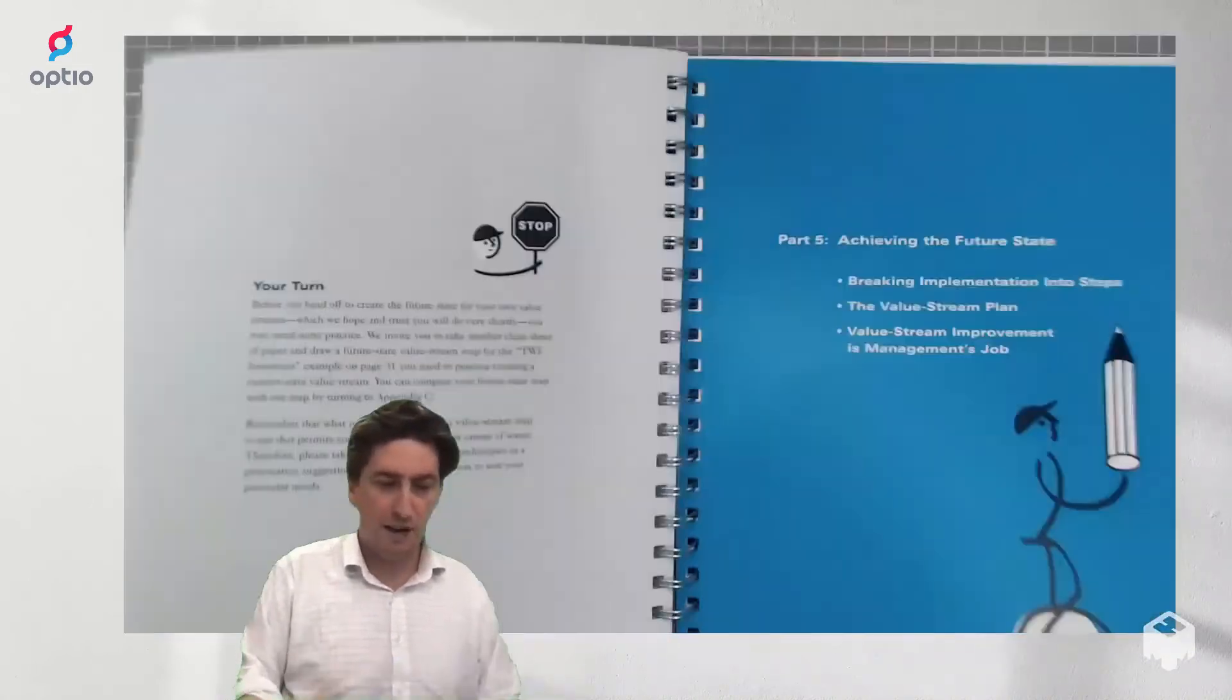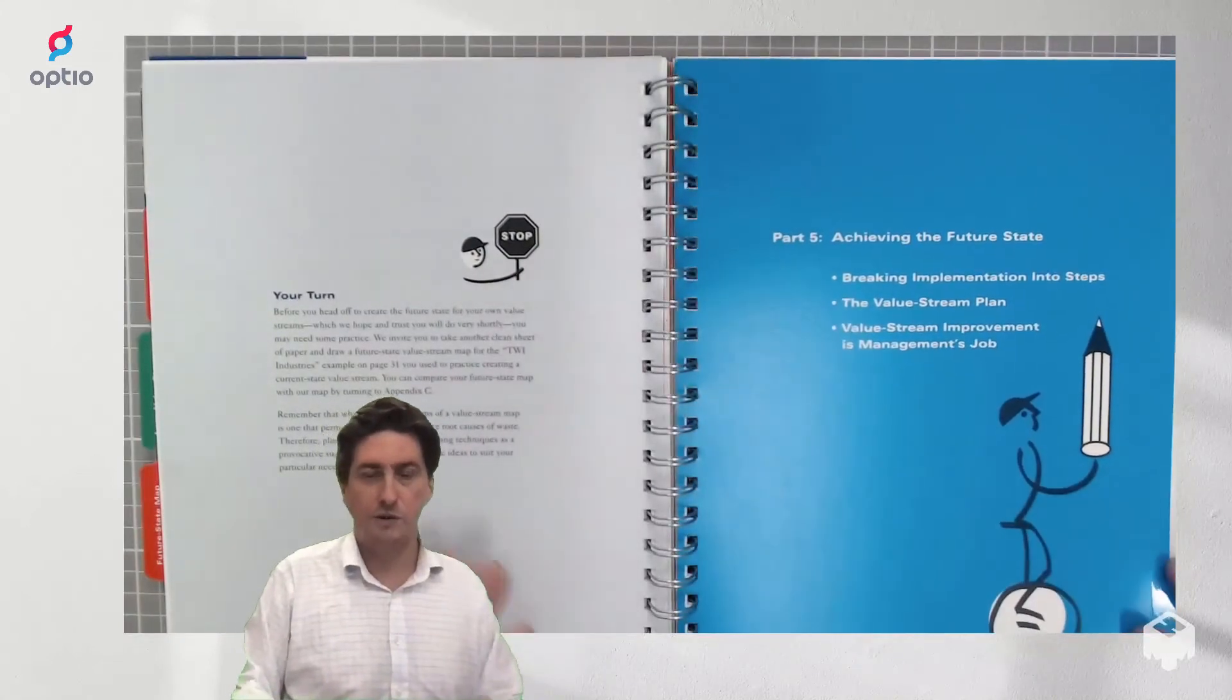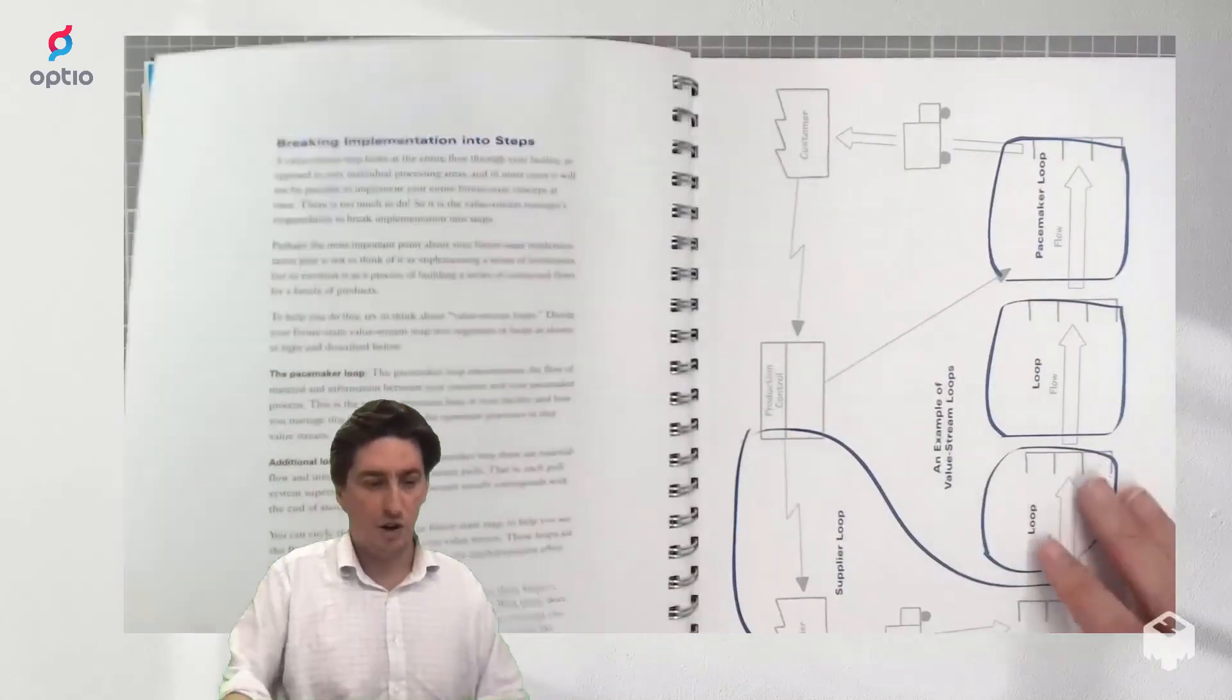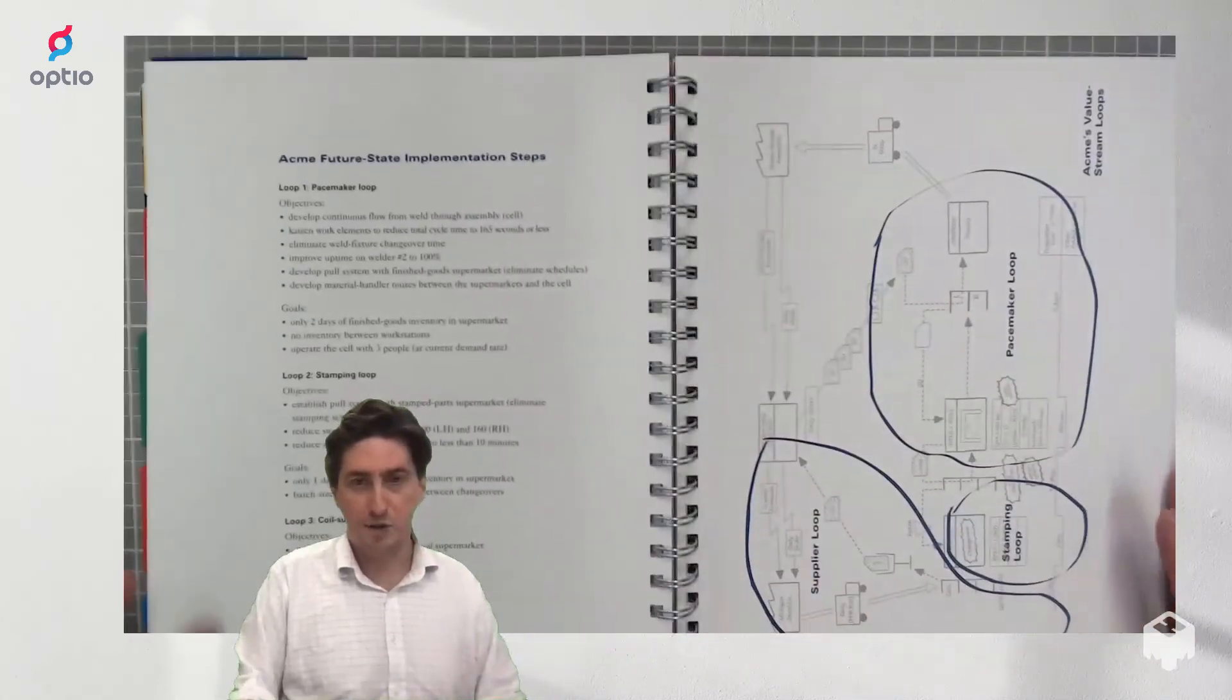So then the fifth part of the book is about how to achieve the future state, how to involve all your co-workers and management into getting this done, how to talk to everyone and what steps to perform first.